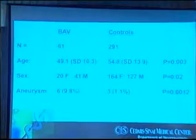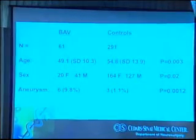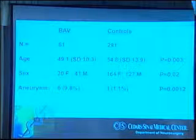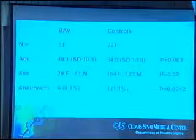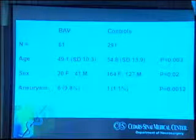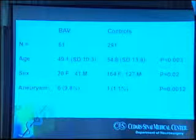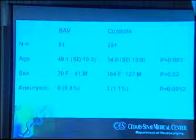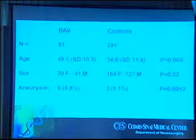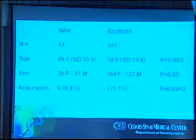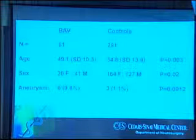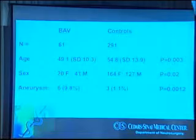When you compare those two groups, age is a little bit higher in controls, and women are a little bit more common in controls. That's important to remember because we know that the older you get, the more likely you are to have an aneurysm, and it's also more common for women to have an aneurysm compared to men. But in spite of those two factors being more common in controls, there was an obvious increased risk of aneurysms in people with a bicuspid aortic valve. Out of the 61 people with a bicuspid aortic valve, six of them — about 10% — had an aneurysm. Of the 291 controls, three were found to have an aneurysm. So it's about 10 times more common in people with a bicuspid aortic valve.